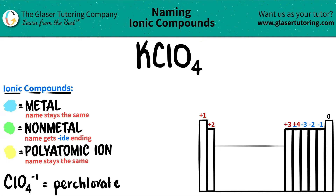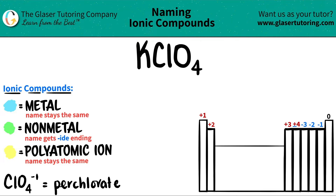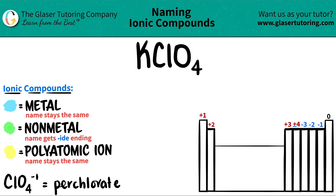Today we are going to be naming the ionic compound KClO4. Here's a little trick: if you see that you have an ionic compound that has three or more different elements, then you know that you're dealing with at least one polyatomic ion.